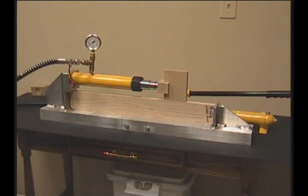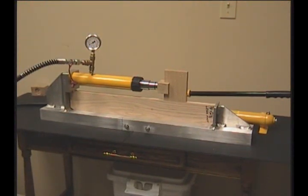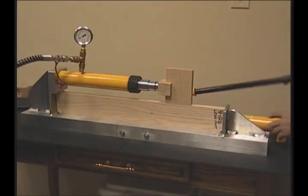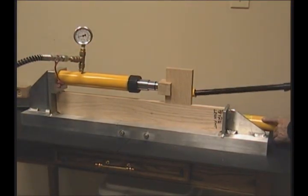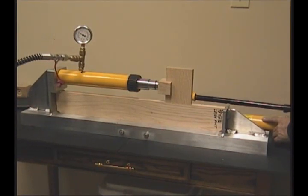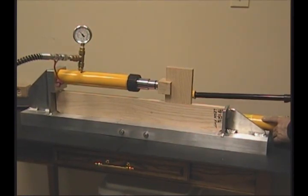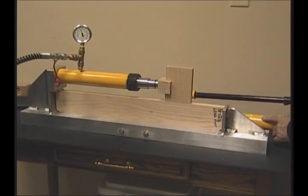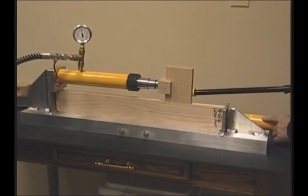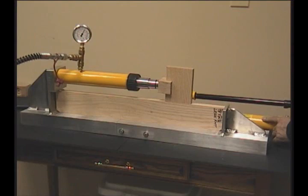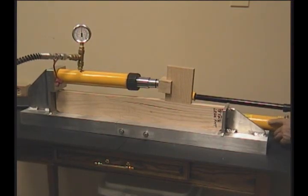The next destructive test is on the Lee FMT mortise and tenon joint, again on red oak. 100, 200, 300, 400, 500, 600, 640.